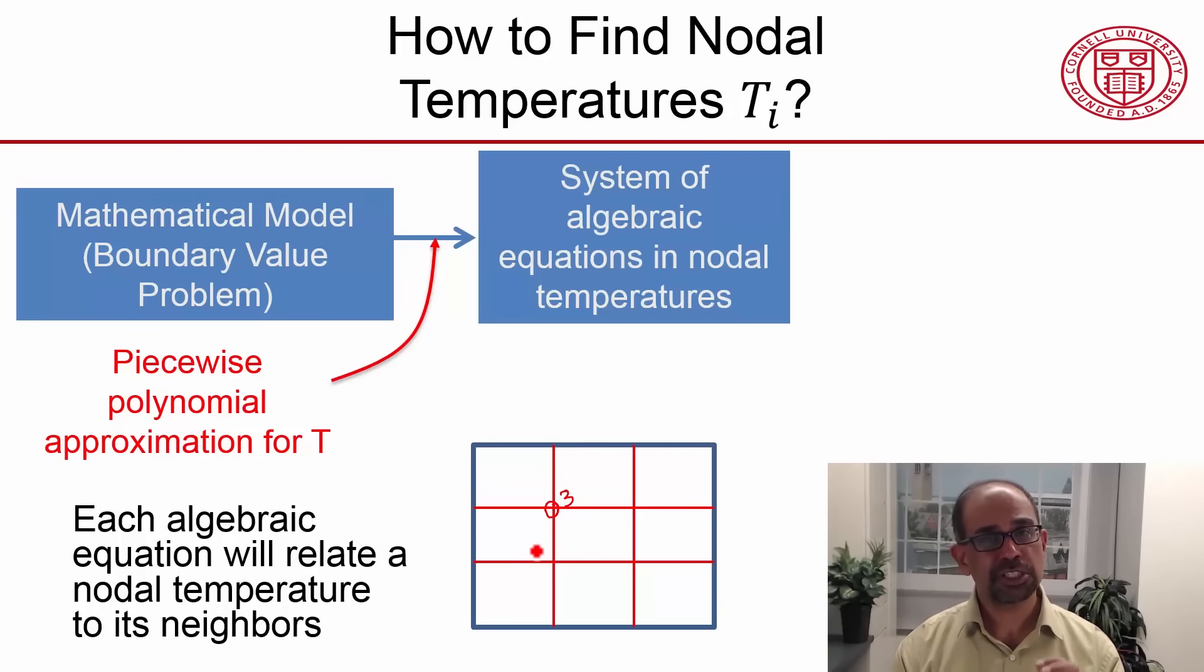And to see which temperatures have been related, we can use a principle that I discussed in the big ideas. So you look at all the elements that are attached to that particular node. We have four elements attached to that node, and then you pick out all the nodes that are attached to each of those elements.